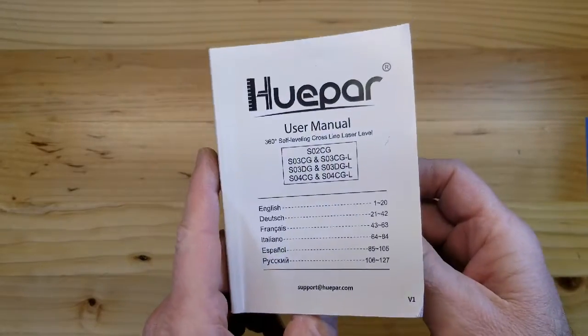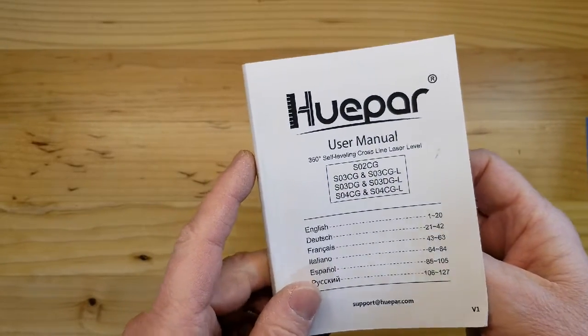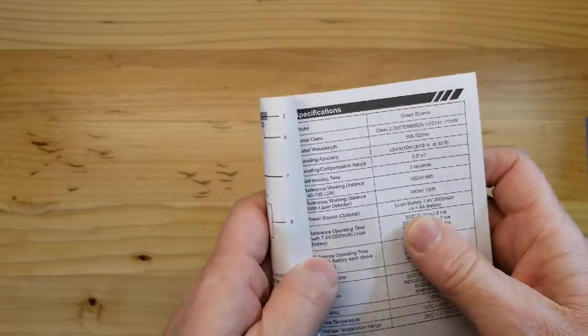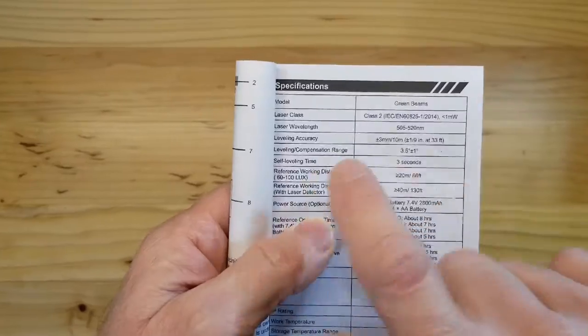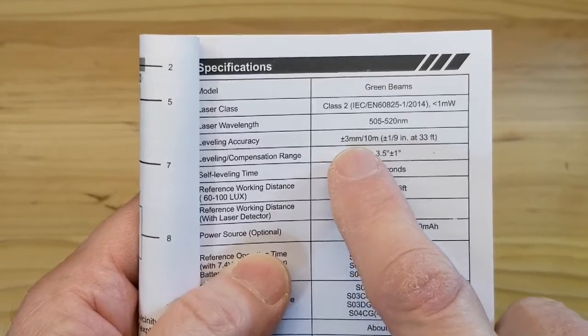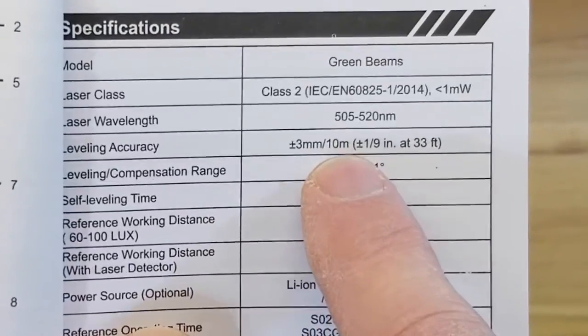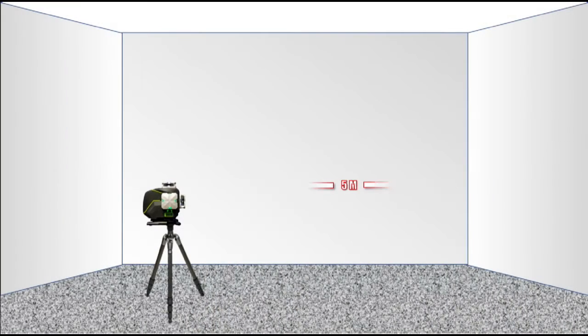To know whether or not the laser level is out of calibration, we first check the manufacturer specification. We see that the Hupar specification is plus or minus 3 millimeters when the measured distance is 10 meters from the wall. However, since we are measuring just 5 meters from the laser level to the wall, we will next determine the amount the 360-degree laser plane tilts from true level.